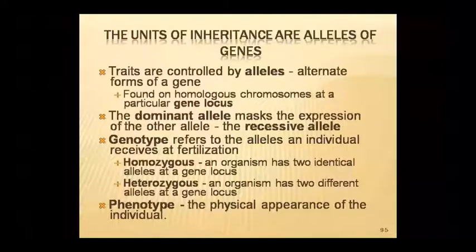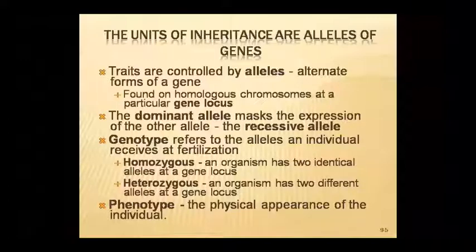The units of inheritance are called alleles of genes. Traits are controlled by alleles, which are the alternate forms of a gene. Alleles are found on homologous chromosomes at a particular gene locus.